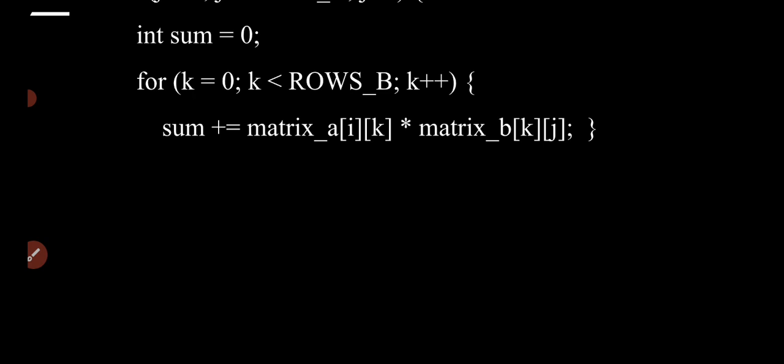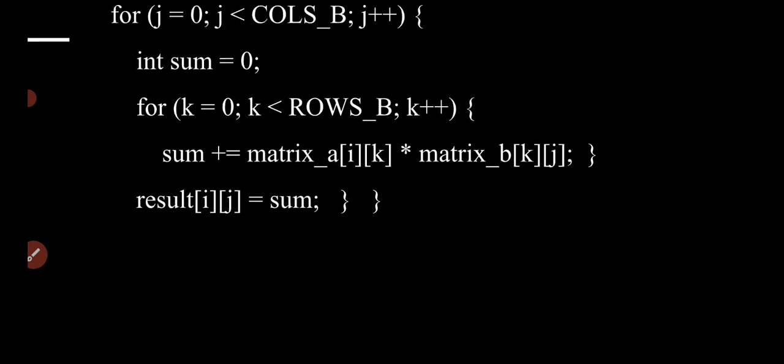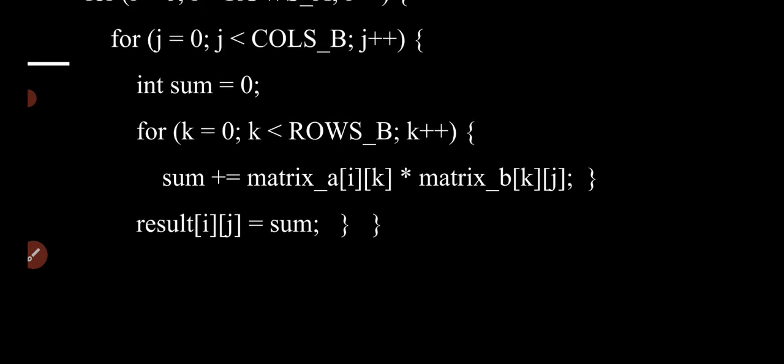The answer element is result[i][j] from A[i][k] multiplied by B[k][j]. This is what the logic does — the sum is found out. Then the inner for loop braces are closed. Now result[i][j] is equal to sum. The j for loop and the i for loop are then closed.